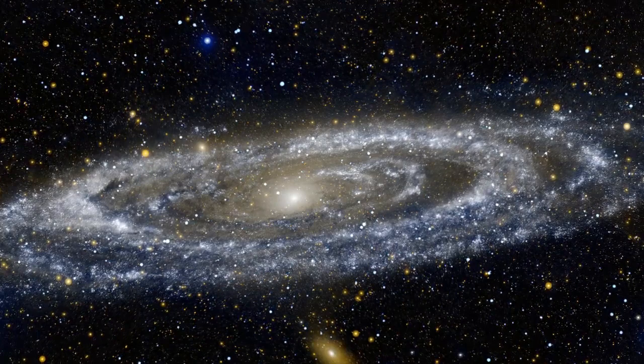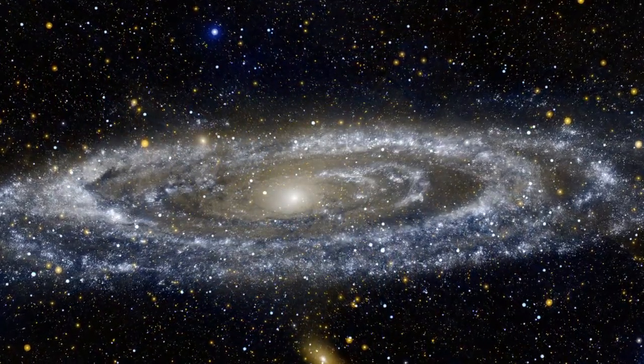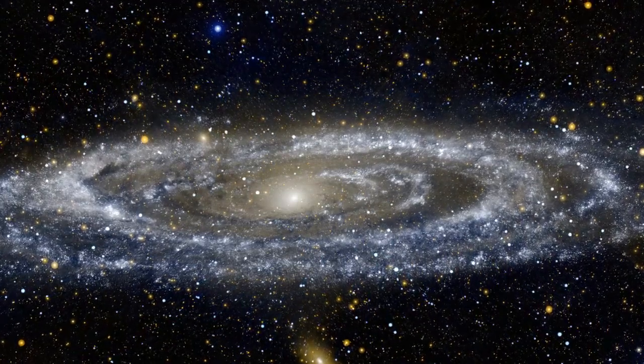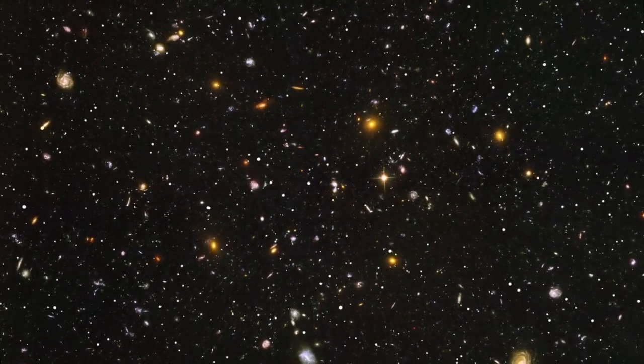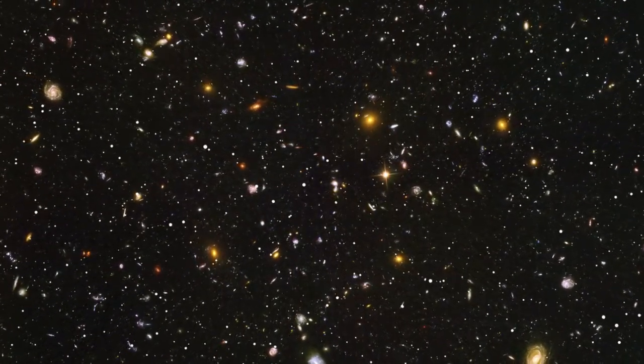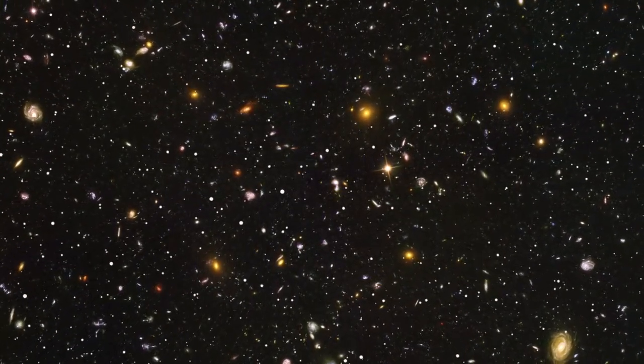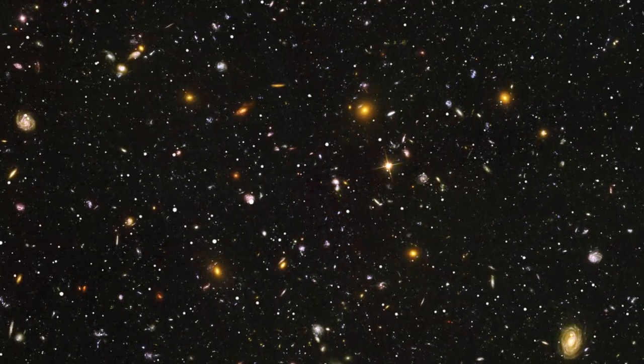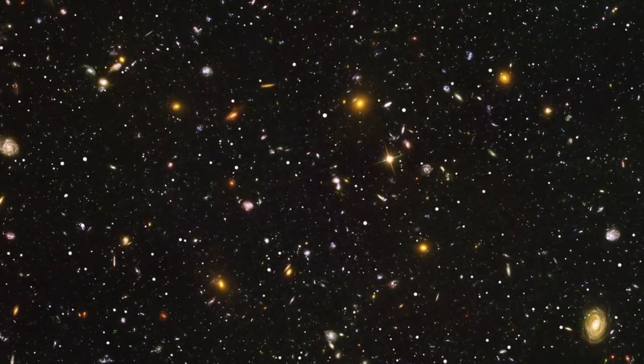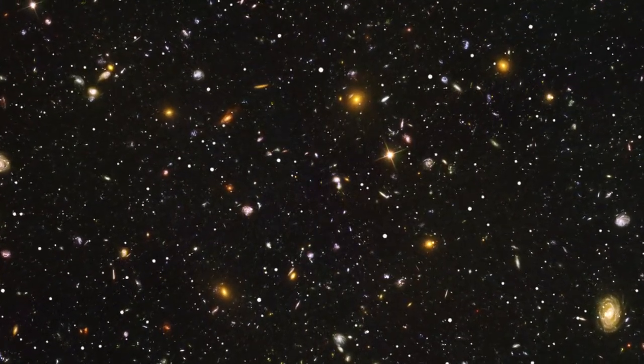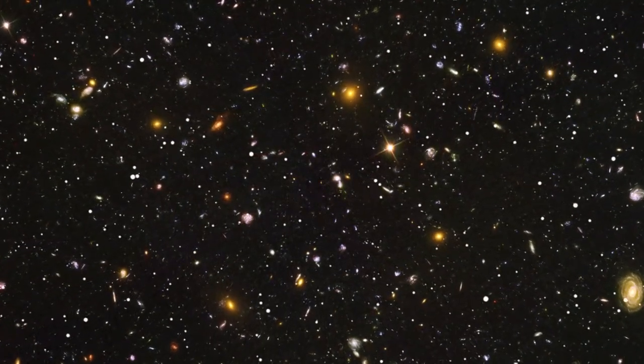The question they debated might seem almost trivial to us today: was the Milky Way the entirety of the universe, or were there other galaxies beyond it, suggesting a much vaster cosmos? At the time, this was a revolutionary idea. Astronomers then believed that the universe consisted solely of the Milky Way. Even when observing objects like the Andromeda galaxy, which we now know to be a separate galaxy, these were thought to be mere star systems or spiral nebulae within our own galaxy.